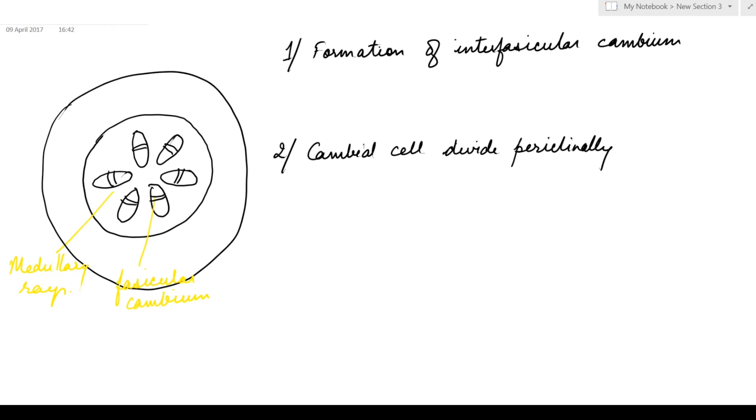First step of secondary growth is formation of interfascicular cambium. This is a vascular bundle in which xylem is towards inner side, phloem is towards outer side and present in between is the cambium. The cambium present in between the vascular bundles are known as fascicular cambium.